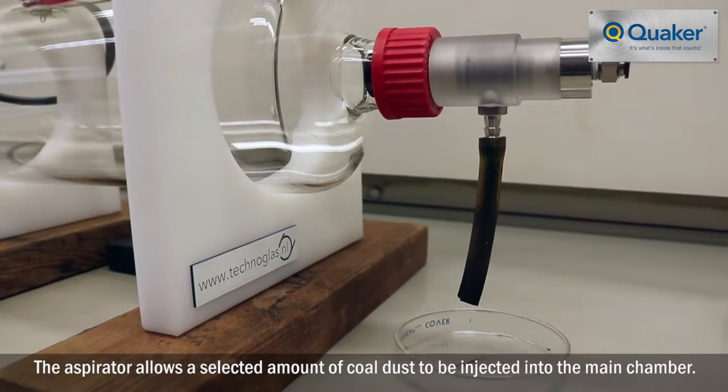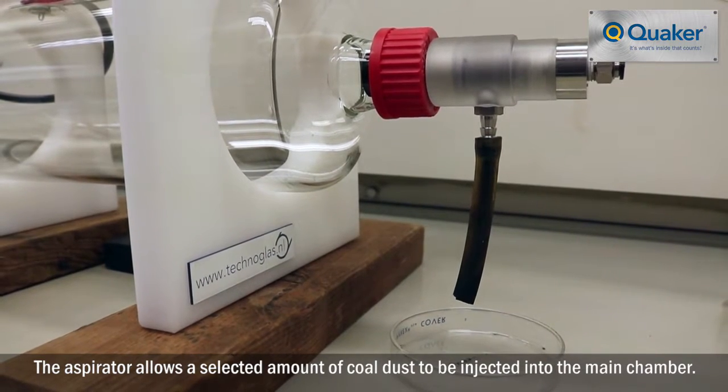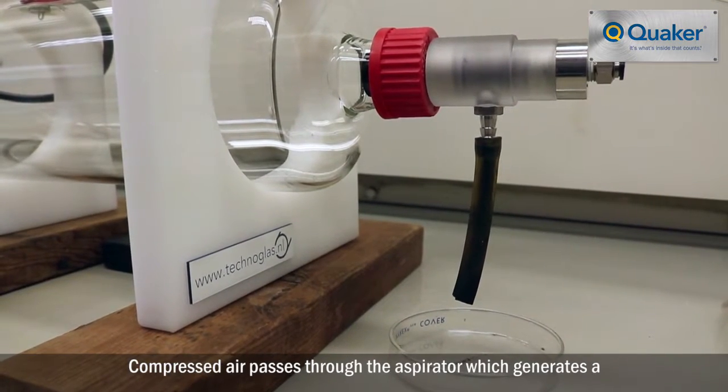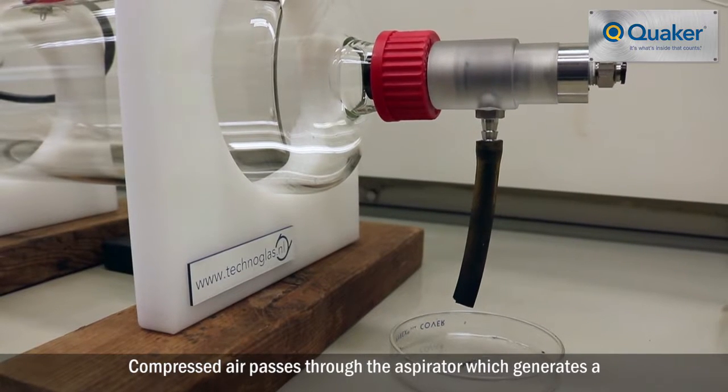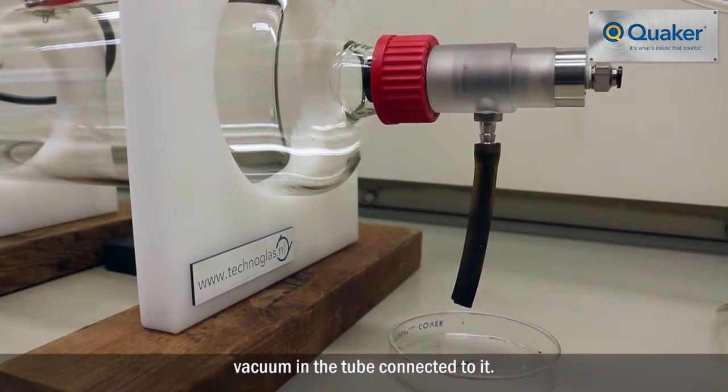The aspirator allows a selected amount of coal dust to be injected into the main chamber. Compressed air passes through the aspirator which generates a vacuum in the tube connected to it.